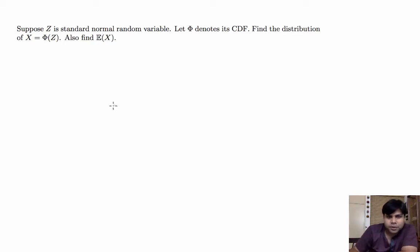Hi, welcome. In this video we will solve the following problem. Suppose Z is a standard normal random variable and let us suppose that this capital Phi denotes its CDF. We are asked to find the distribution of capital X which is equal to Phi of Z.